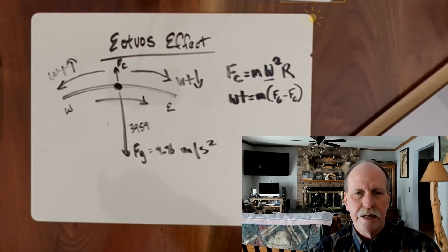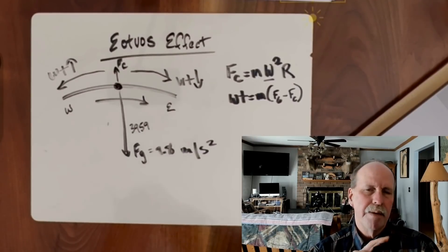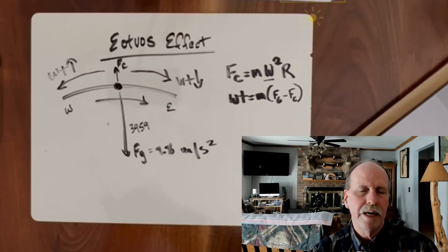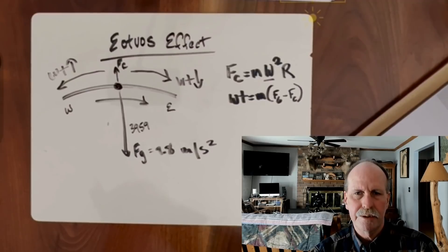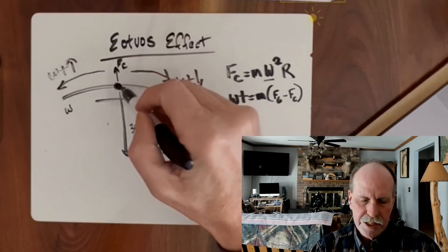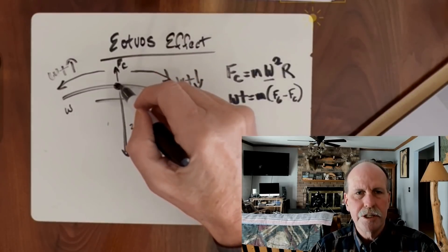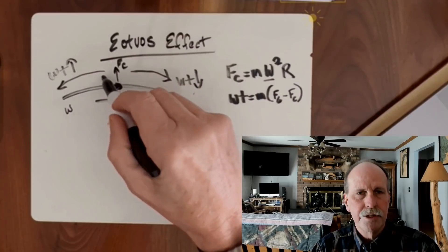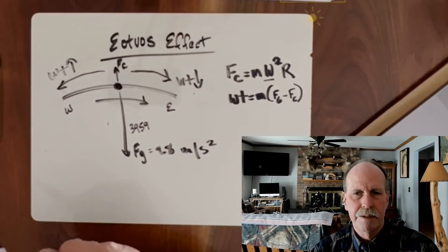We can design an experiment to test this. We are not testing the radius of the Earth, the shape of the Earth, or the baseline rotational velocity of the Earth. What we are testing is: does weight change from a stationary position to moving east versus moving west? This is a direct test of the Eötvös Effect.